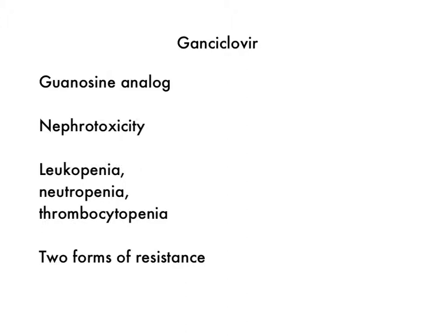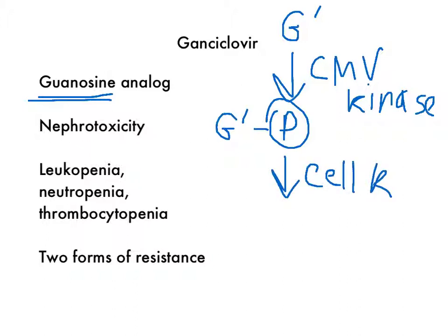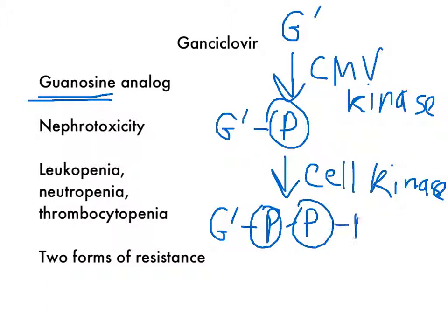The first drug is ganciclovir. Ganciclovir is a guanosine analog, and this guanosine analog is going to inhibit the viral DNA polymerase. Starting with ganciclovir — call it G' — the very first step is that it's phosphorylated by CMV kinase, the viral kinase, and that puts a phosphate at the 5 position of ganciclovir. Then the host cell kinases — our kinases — put on the second two phosphates, because they think it's guanosine monophosphate, but it's actually ganciclovir monophosphate. Then this ganciclovir triphosphate goes on to inhibit the viral DNA polymerase.